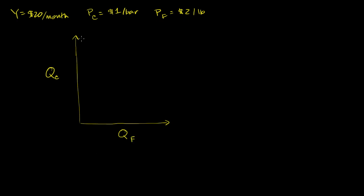If I spent all my money on chocolate, I could buy 20 bars of chocolate a month — so that is 20, and this is 10 right over here. At these prices, if I spent all of my money on fruit, I could buy 10 pounds per month. So this is 10 pounds per month, and so I have a budget line that looks like this.